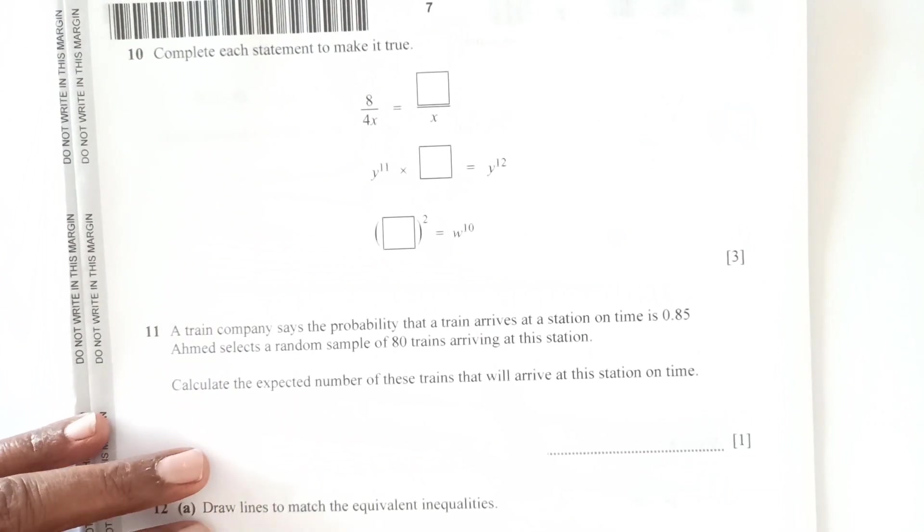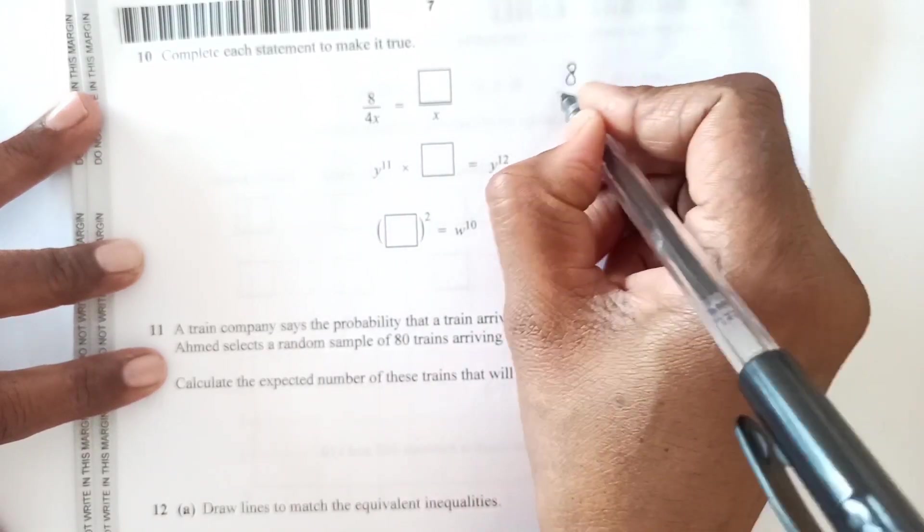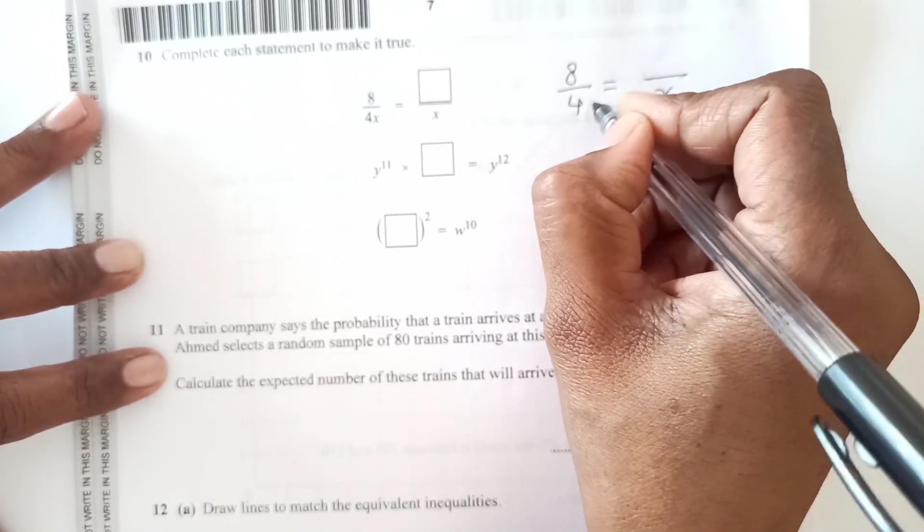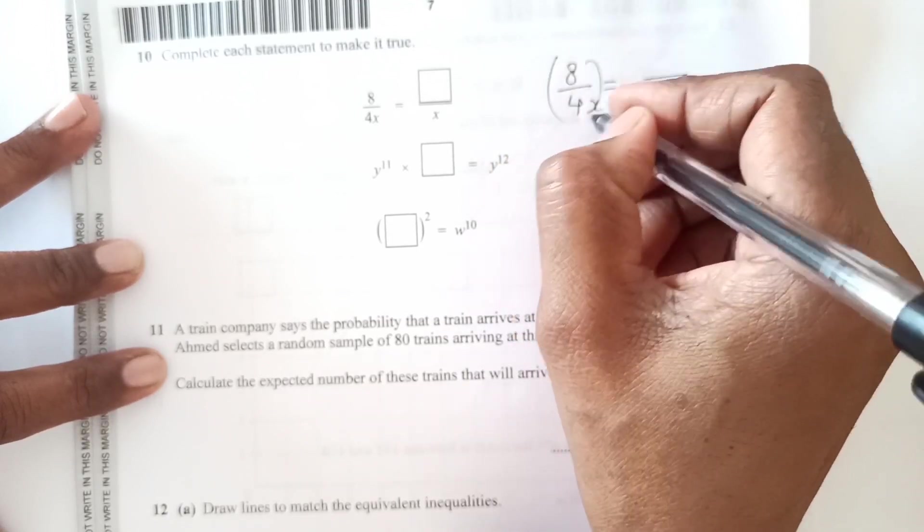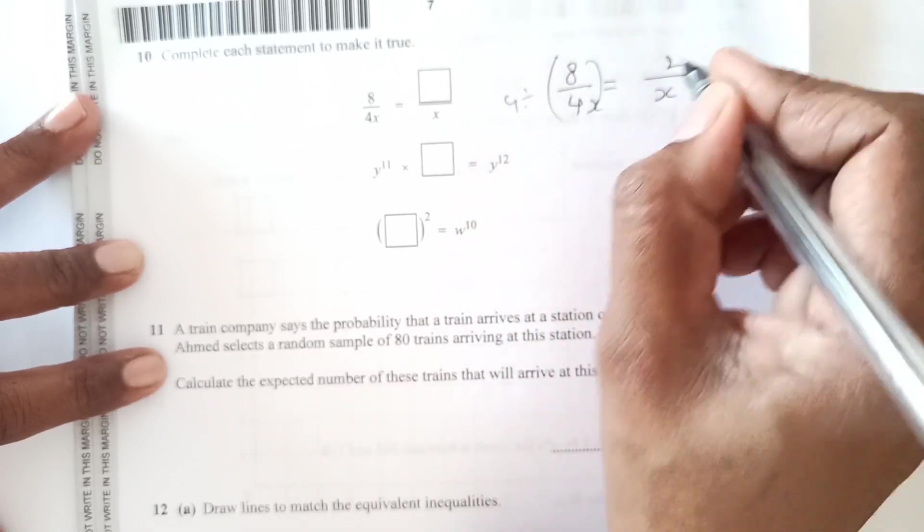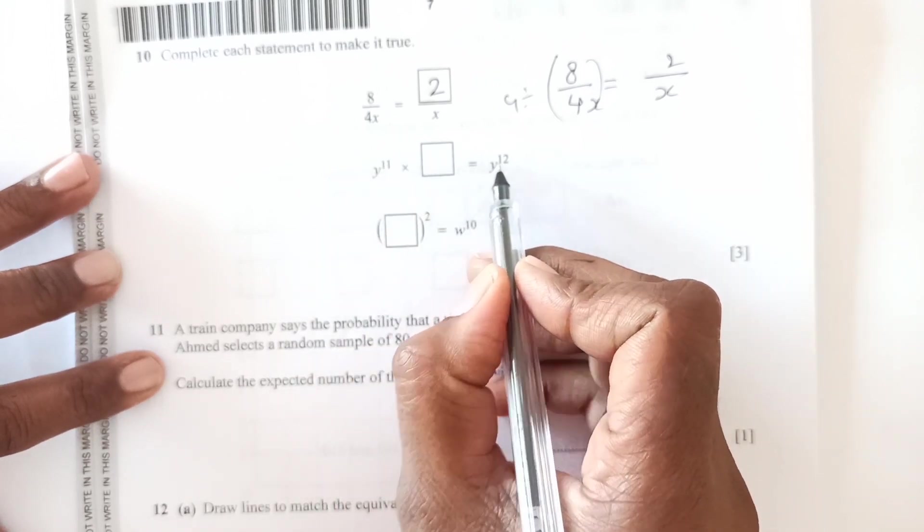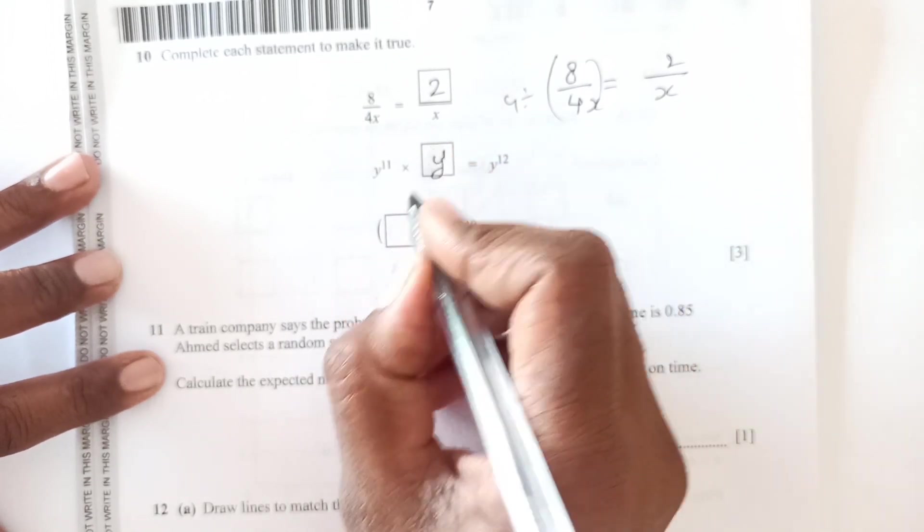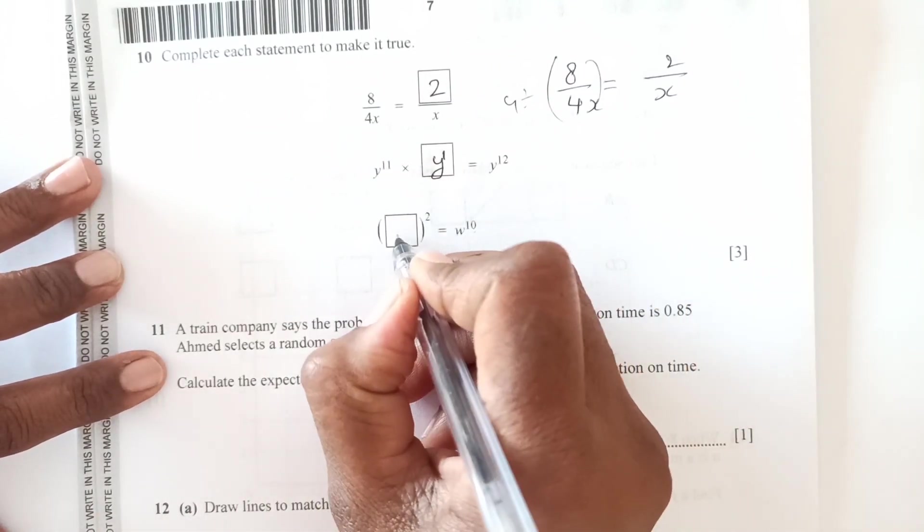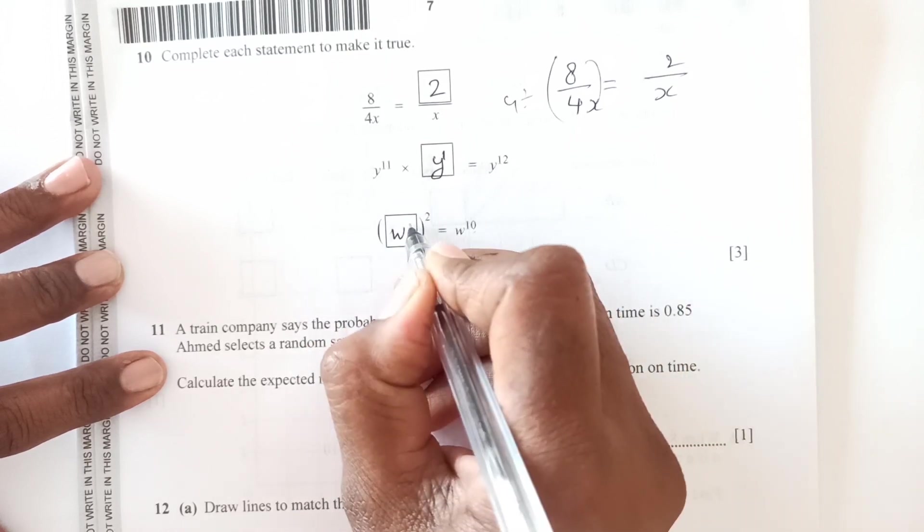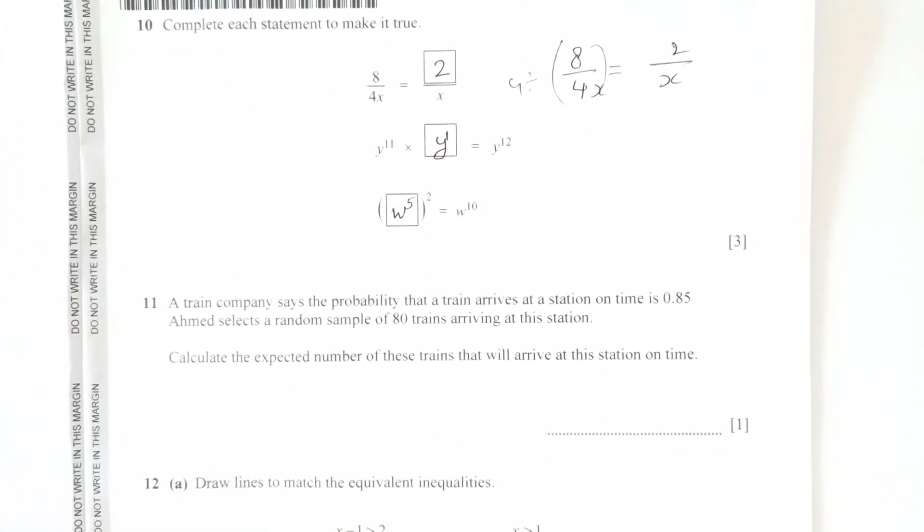Now number 10, complete each statement to make it true. So 8 over 4 and we have here over 4x. So that means this is divided by 4. So we will divide this also by 4. So divide everything by 4. So this will become 2 here. So this is 2 over x. Next one is y power 11 and we need y power 12. So 1 more y is needed, y power 1. 11 plus 1 it will make it 12. So here w power 10. So w is needed to make power 10 we should have 5 here. 5 times 2 is 10. Law of exponents we are using over here.